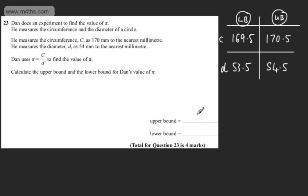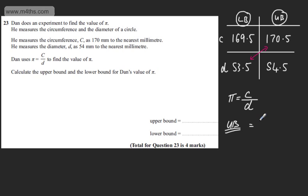Now we're looking to find the upper bound. Pi is equal to C divided by D. If we want the upper bound, we take the largest value of C and the smallest value of D — we want this fraction to be as big as possible. So we have 170.5 divided by 53.5.